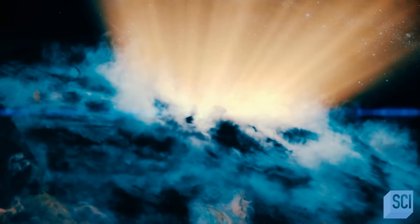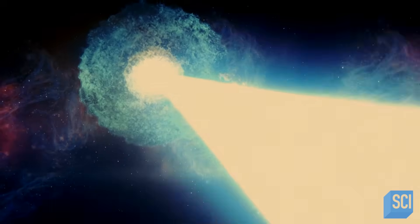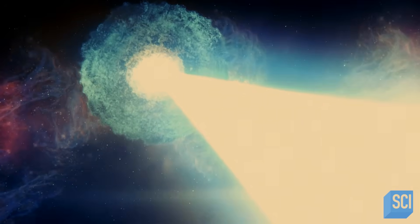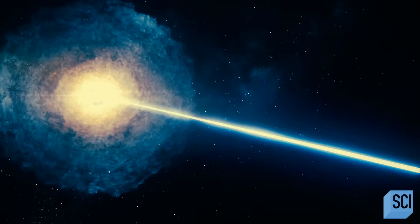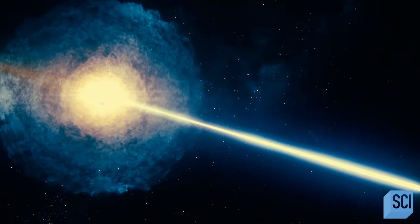We know that GSN 069 has a supermassive black hole in its center, equal to about half a million times the mass of the Sun. That's a big black hole. And it blasts out x-rays in a very steady pace every nine hours.